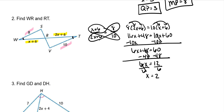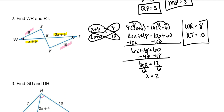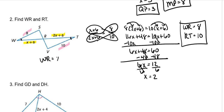Plugging X equals 2 back in: WR equals X plus 6, which is 2 plus 6, giving WR equals 8. RT equals 2 times X plus 6, which is 2 times 2 plus 6, giving 4 plus 6, so RT equals 10.